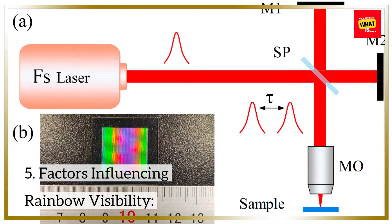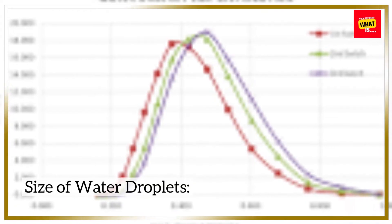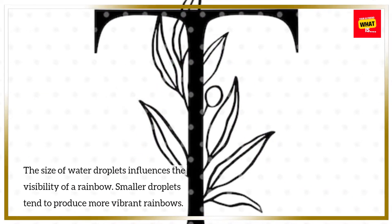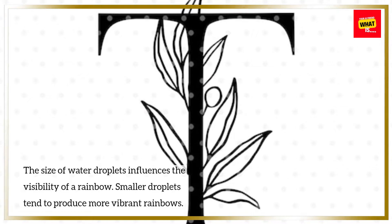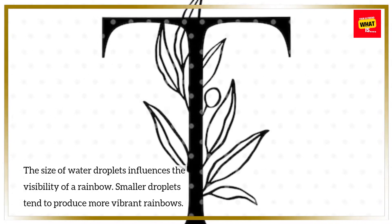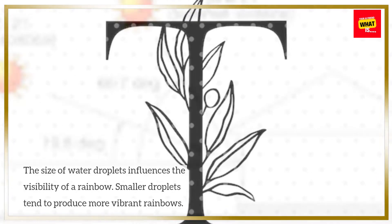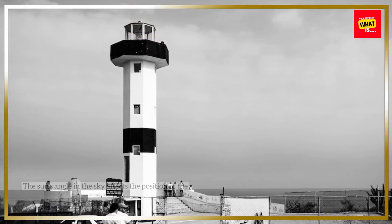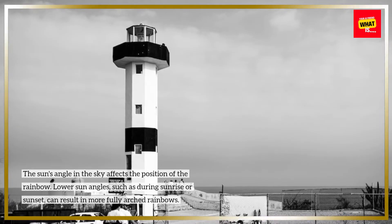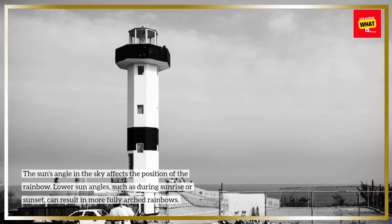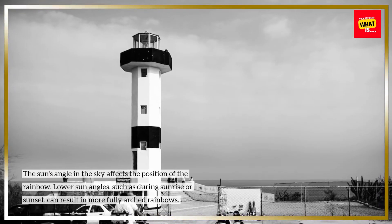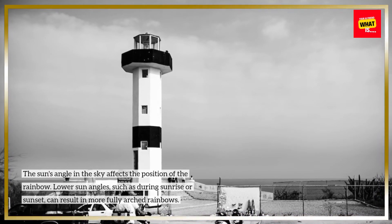5. Factors influencing rainbow visibility. The size of water droplets influences the visibility of a rainbow — smaller droplets tend to produce more vibrant rainbows. The sun's angle in the sky also affects the position of the rainbow. Lower sun angles, such as during sunrise or sunset, can result in more fully arched rainbows.